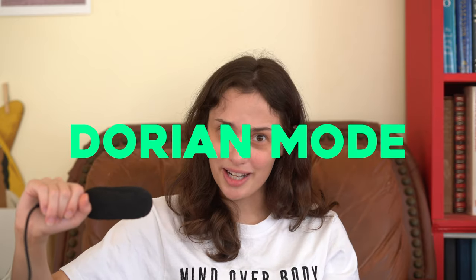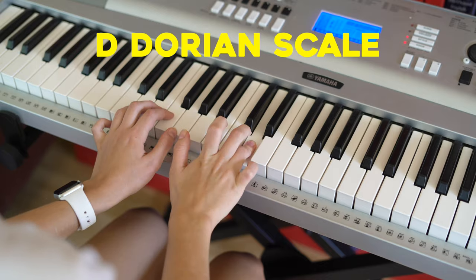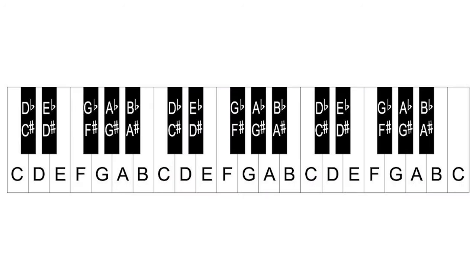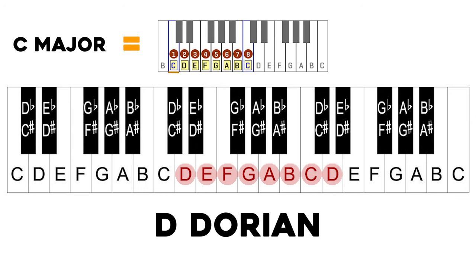Next is Dorian mode. To find Dorian mode in the key of C major, you play the C major scale but start on the D note instead of C. This gives us D Dorian — but this is not to be confused with C Dorian. The key factor of what makes a mode is which notes are being changed, not simply the root note you start on.